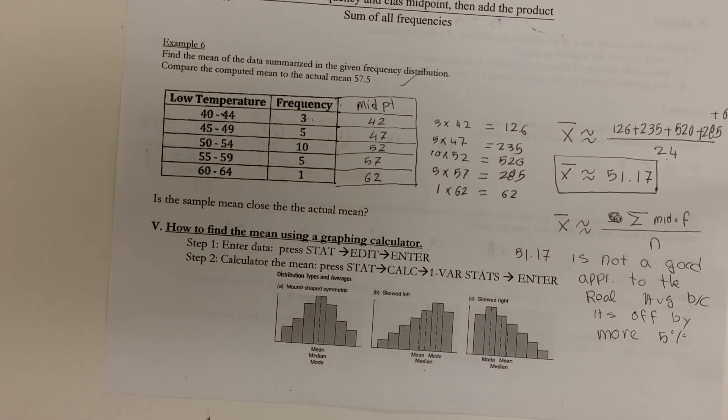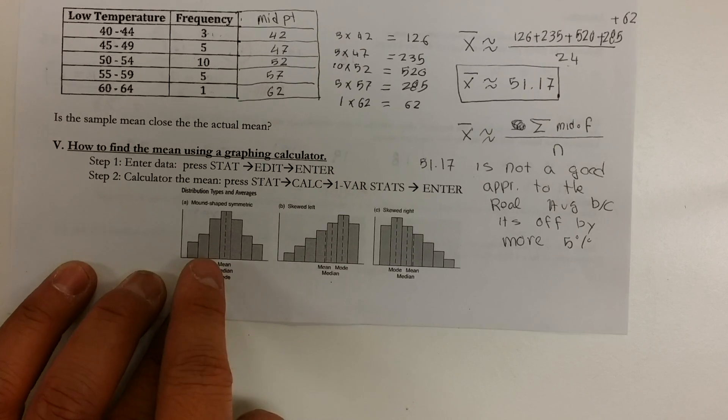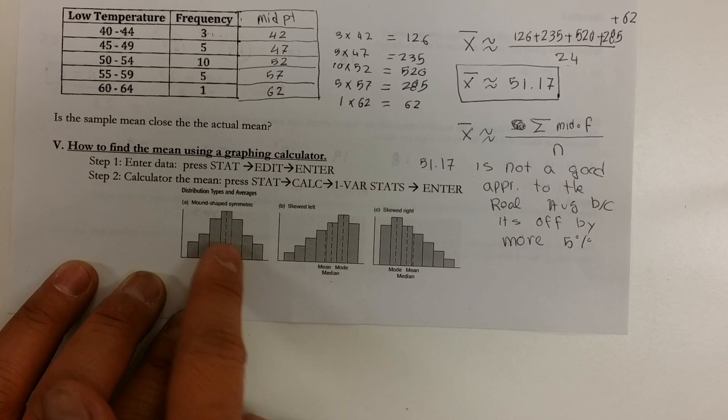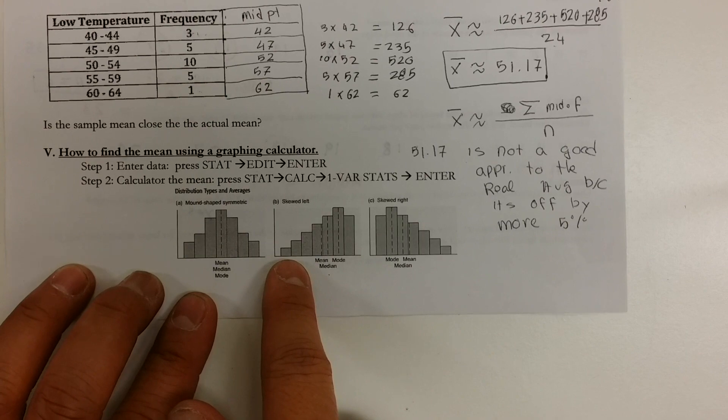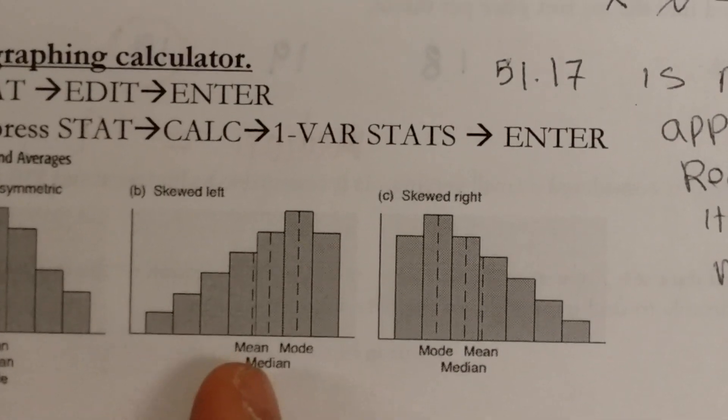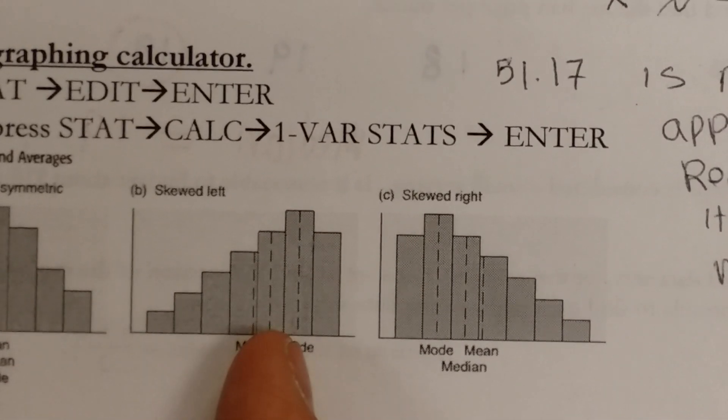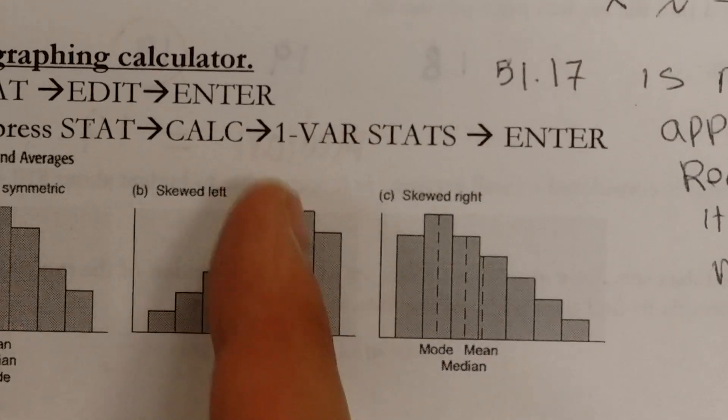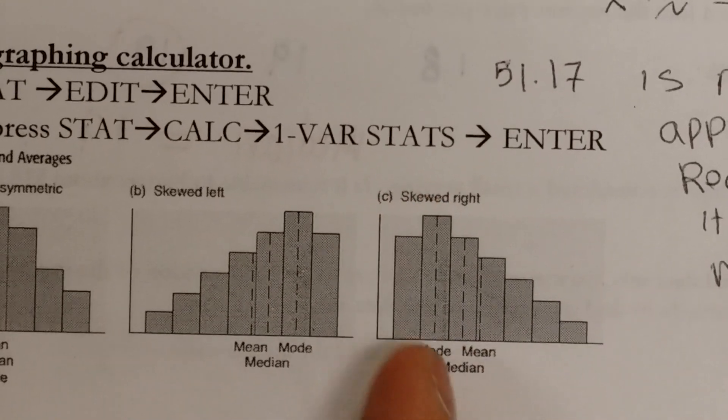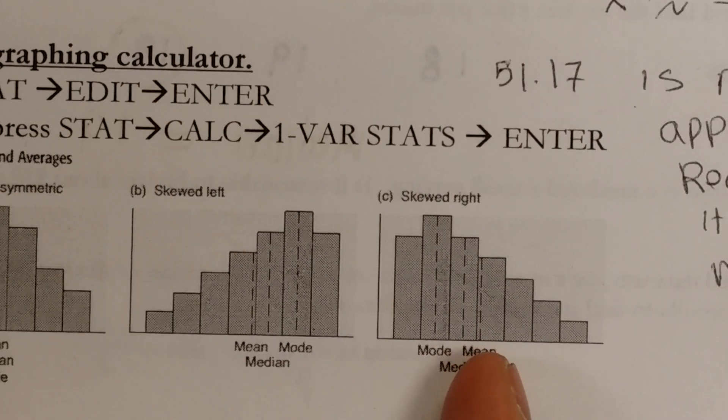So you're gonna be able to do that using a graphing calculator. Look at this last graph that I want you to be able to see. If your data is normal, which, that's what it looks like, then your mean, median, and mode will be the same. If your graph is skewed to the left, then if you look carefully, you can kinda see that the mean is the first number, followed by the median, which is the number in the middle, and then the mode is the last number. That's the number that occurs the most. Remember, the mode is the number that occurs the most. So the number that occurs the most will be the highest bar. If your data is skewed to the right, then the mode, which is the highest bar, that will be the first number, followed by the median, which is the middle number. And then the mean is gonna be all the way to the right.